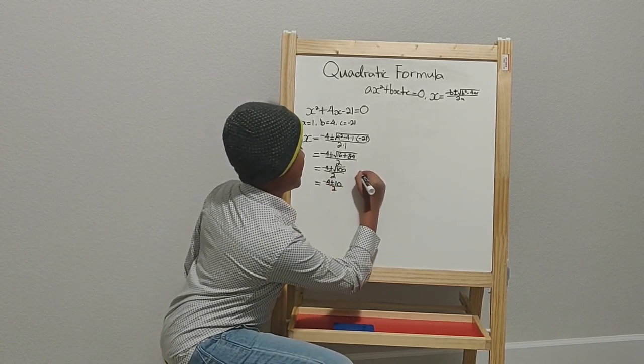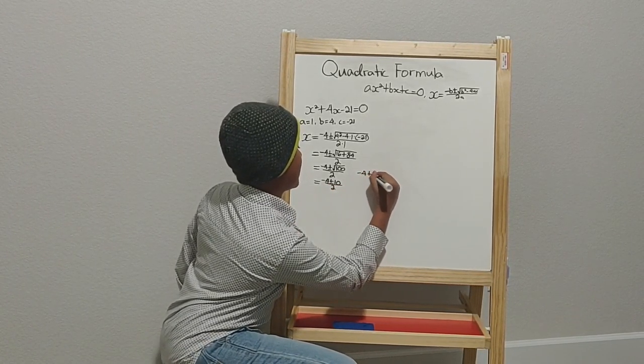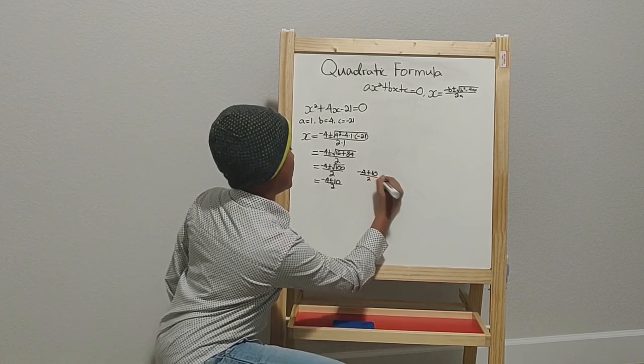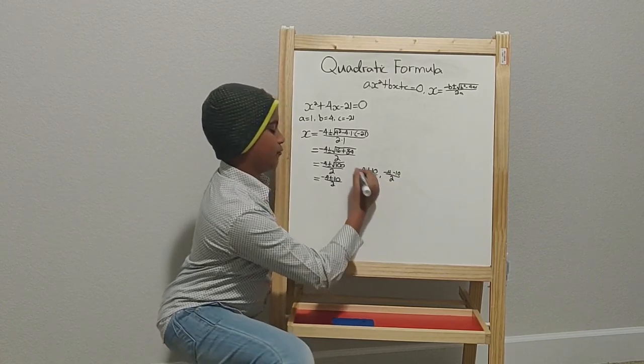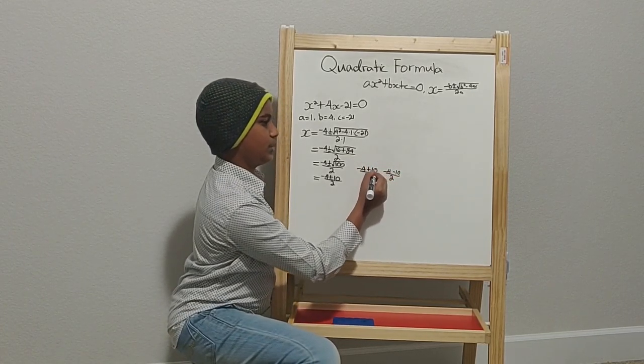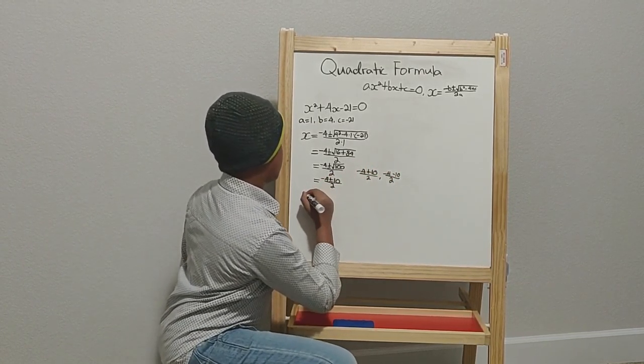So then you will have negative 4 plus 10 over 2, and then negative 4 minus 10 over 2. And when you solve these, these will become your values of x. So let's go and do that.